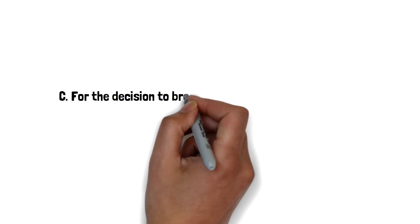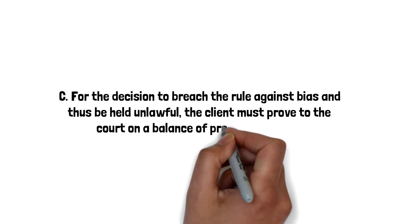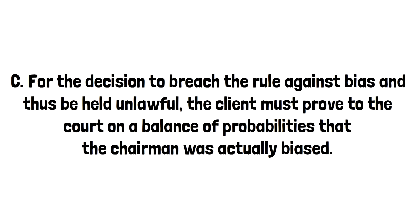Option C: For the decision to breach the rule against bias and thus be held unlawful, the client must prove to the court, on a balance of probabilities, that the chairman was actually biased. This is wrong because the court will ask not only whether there was any actual bias, but also whether there was apparent bias. Again, the test is whether the fair-minded and informed observer, having considered the facts, would conclude that there was a real possibility that the tribunal was biased.